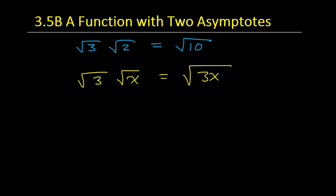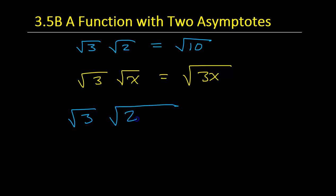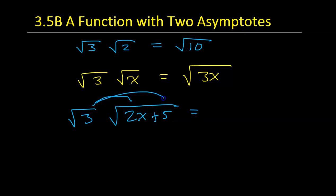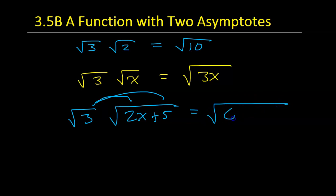What if I had the square root of 3 times the square root of 2x plus 5? Hopefully you can see me about to do the distributive property. And as long as both of these are radicals, this will work out just fine. I'm going to end up with the square root of 6x plus 15.